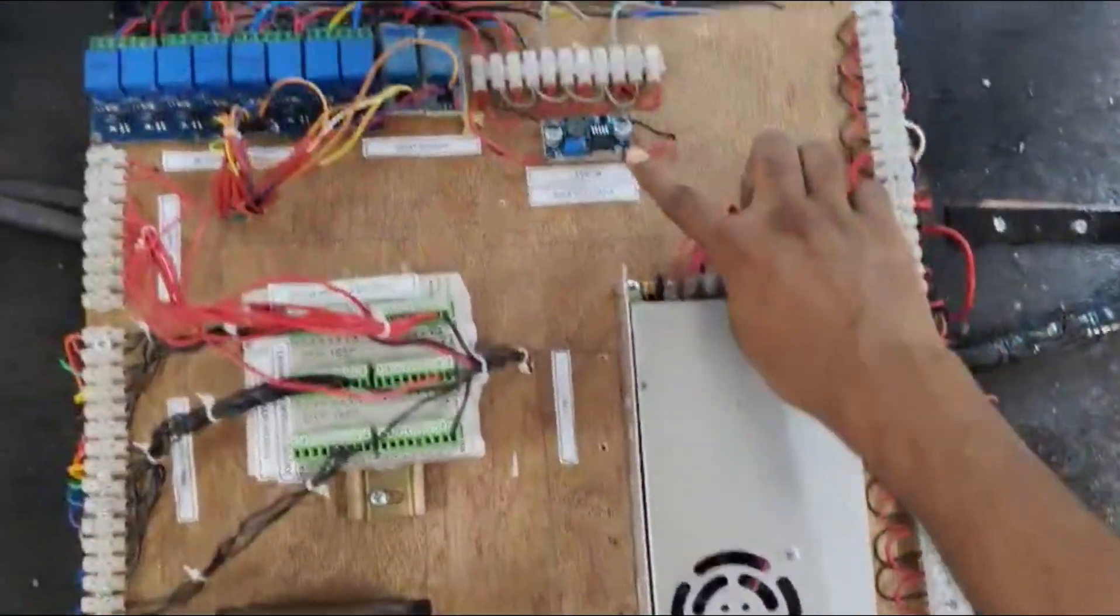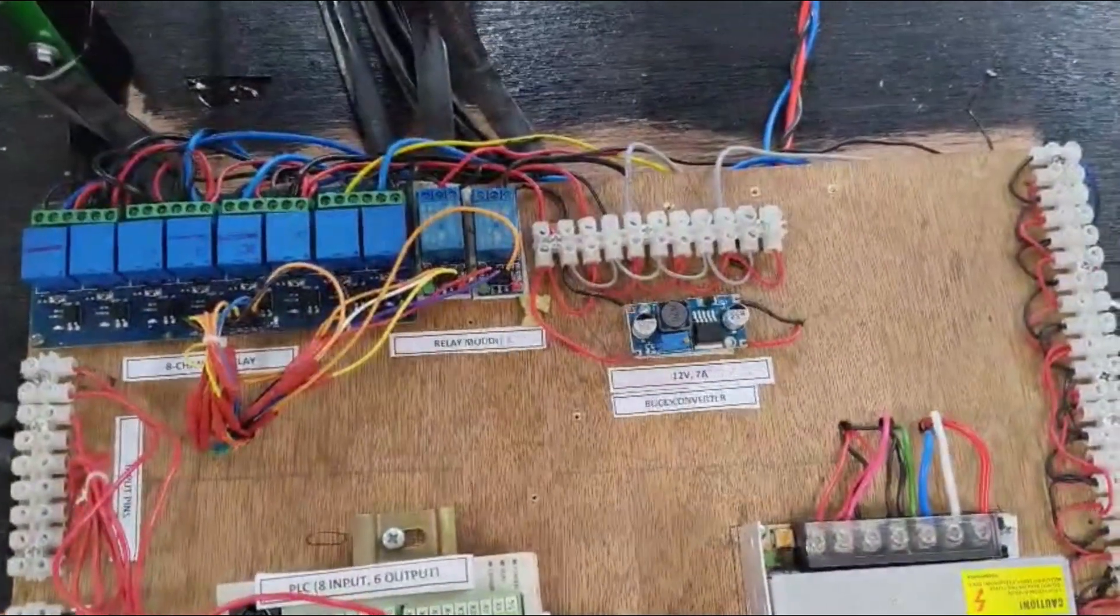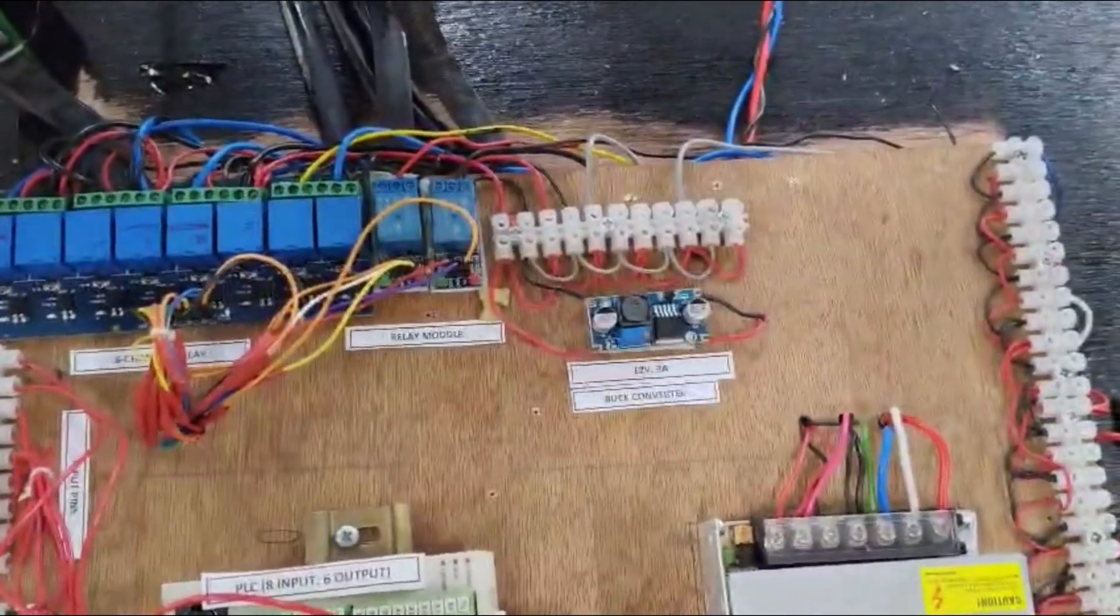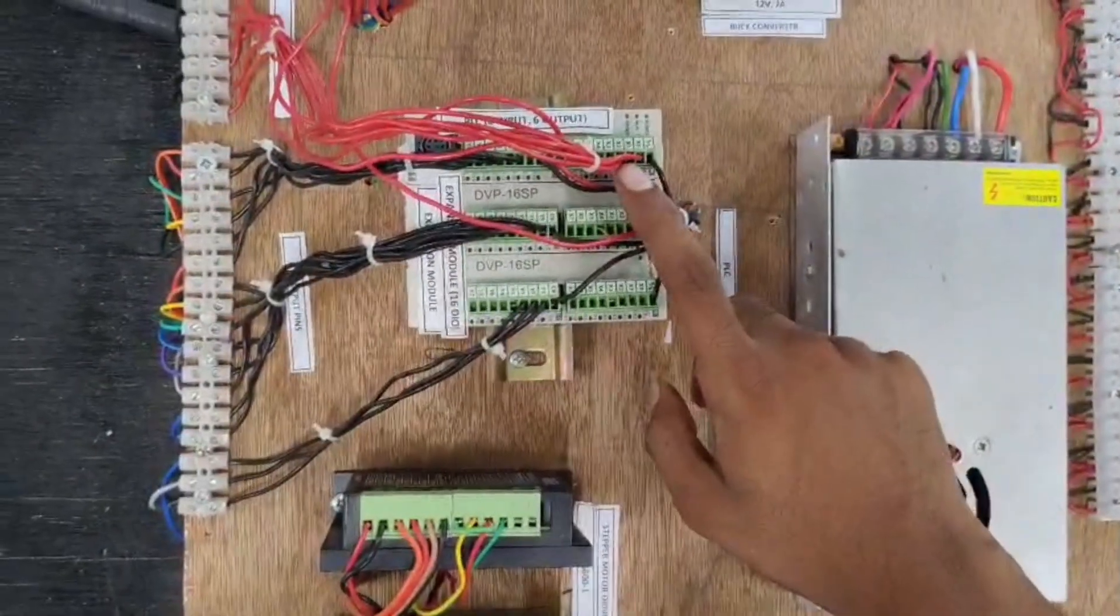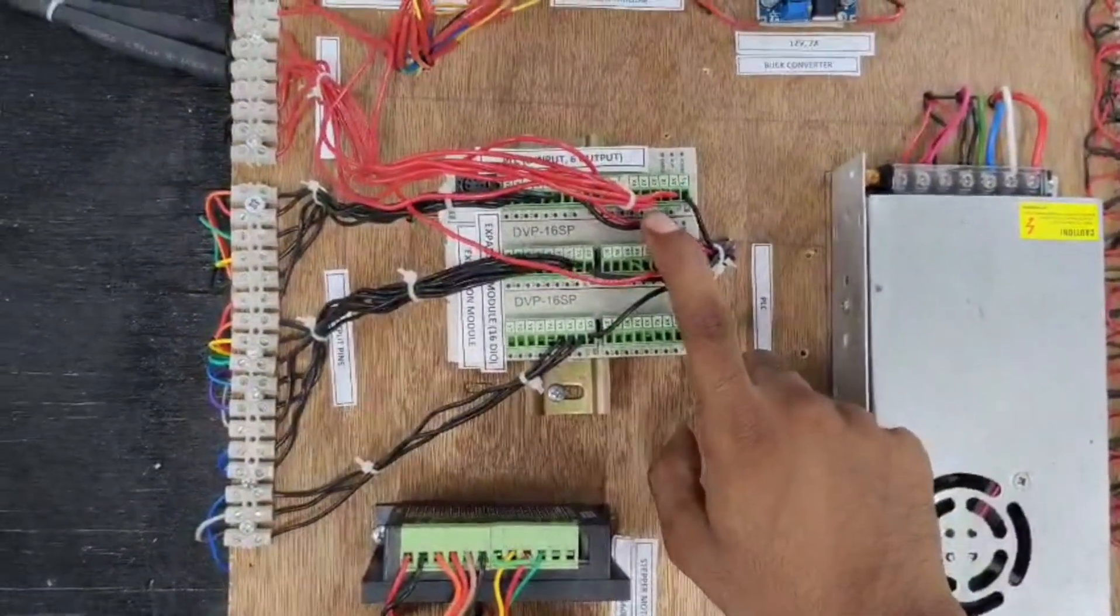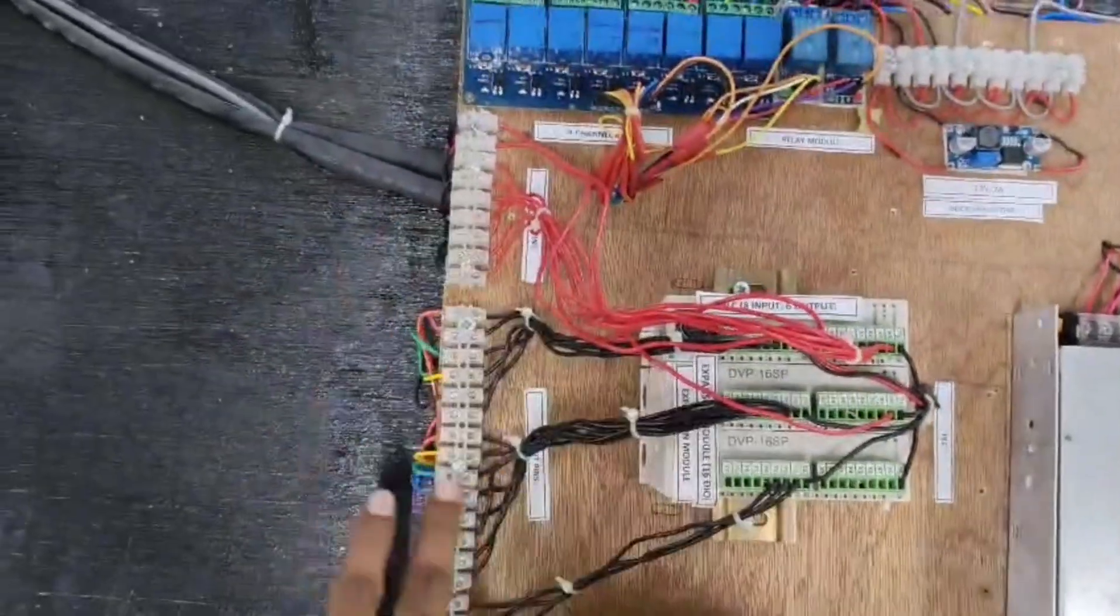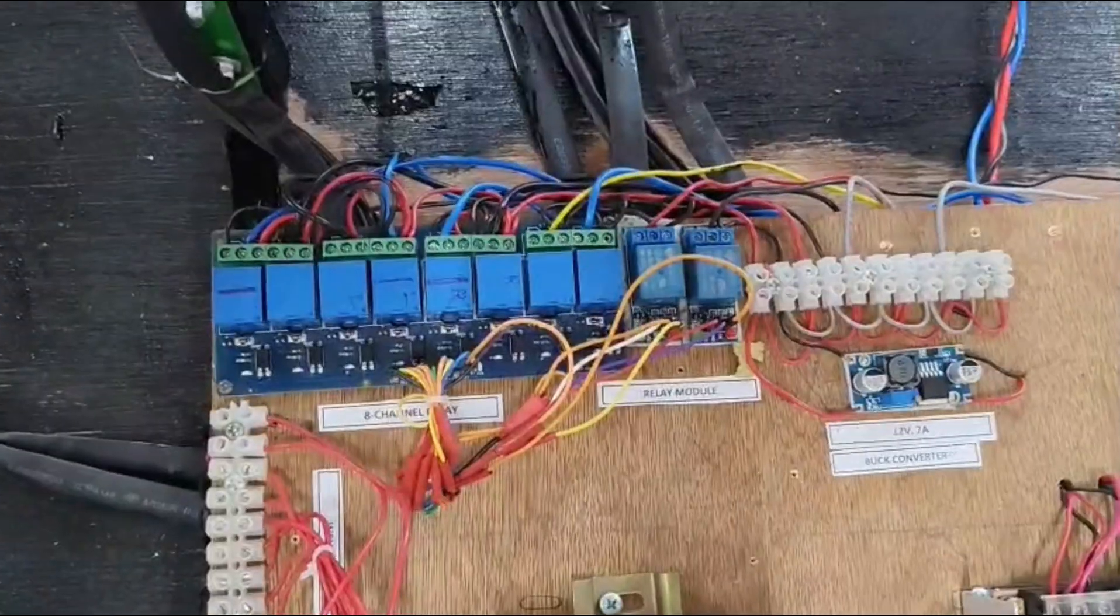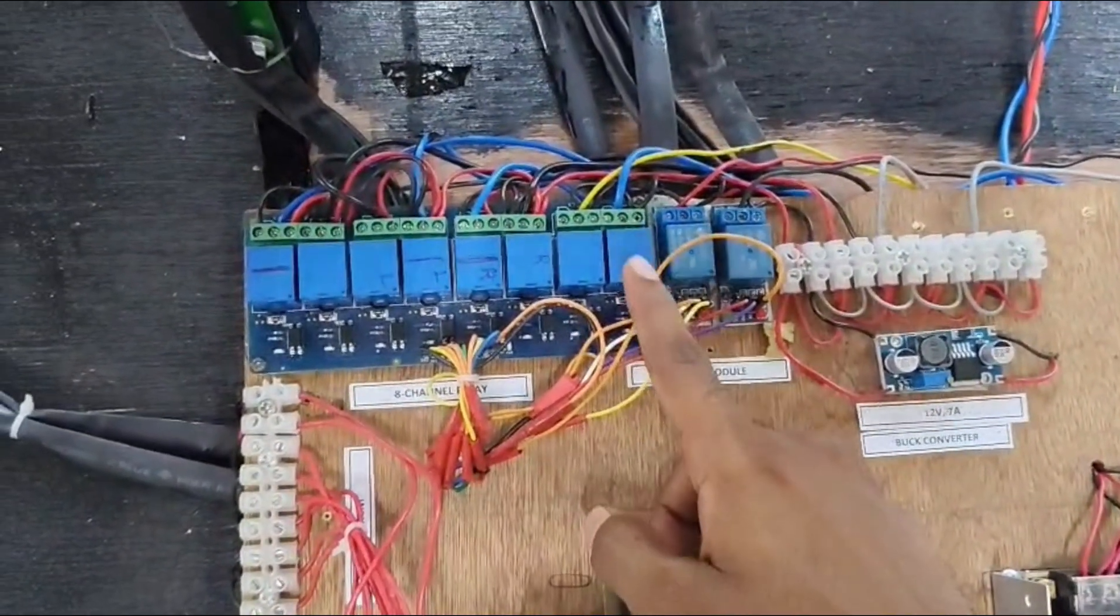And then buck converter. The buck converter is a type of DC to DC voltage regulator that steps down the 24V DC to an output of 12V. For the controller, we are using a PLC. It has series name as 14SS211T. It has 8 digital inputs and 6 outputs. Here we are using 8 channel relay module and 2 channel relay module to control the DC motors.